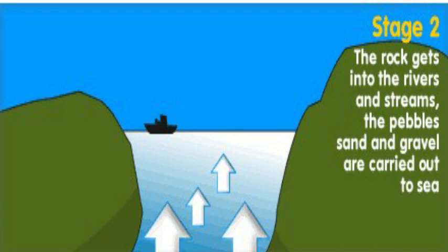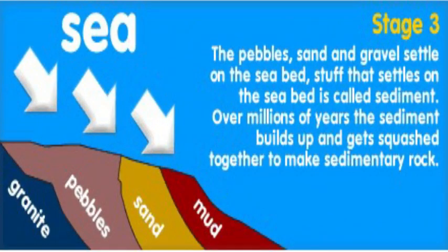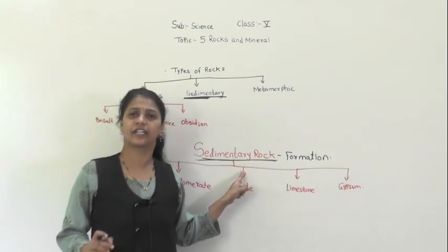The rock sinks down to the bottom of the sea, and that is called a sediment. It settles down at the bottom of the sea. As time passes, more sediments settle in lower and lower layers, and due to the pressure of these rocks, the rock which is formed is called a sedimentary rock.